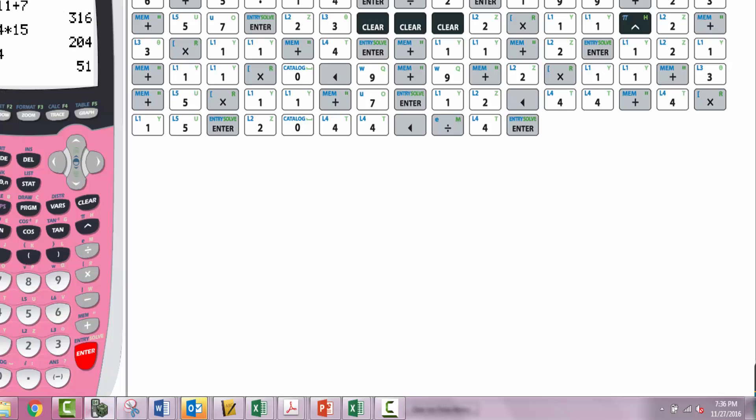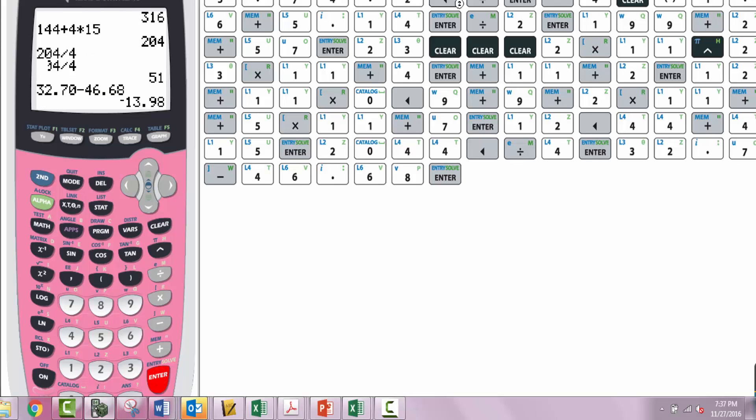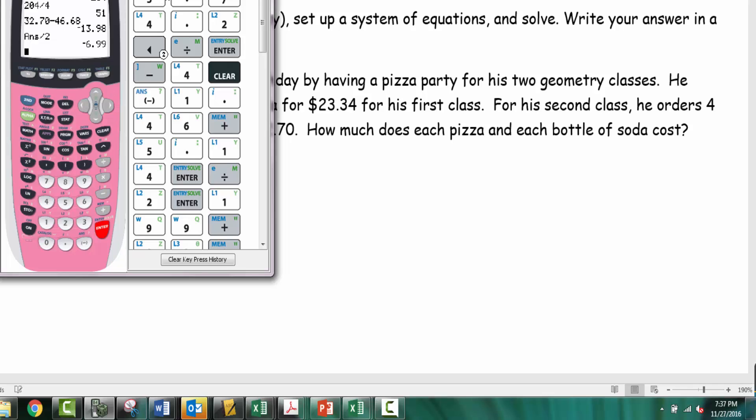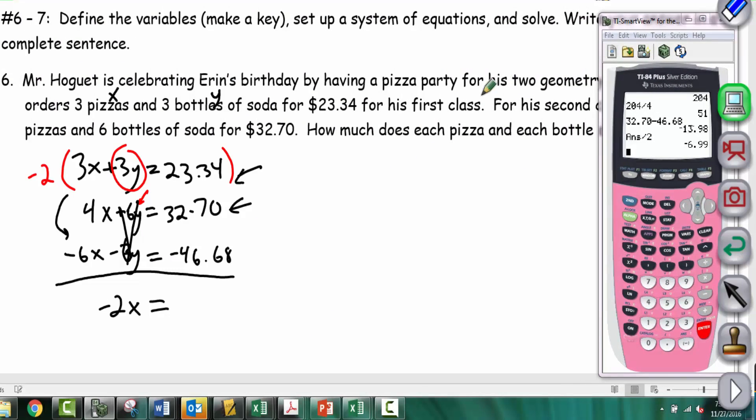We have the calculator on screen here. 32.70 minus 46.68 gives us negative 13.98. Then we're going to divide that by 2 to get 6.99. Let me adjust the screen view here so the calculator displays properly.